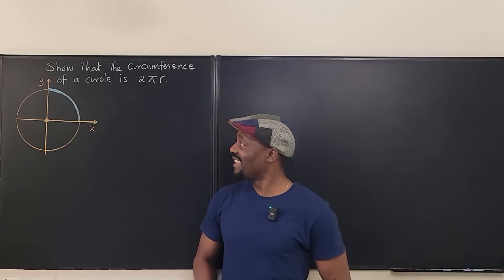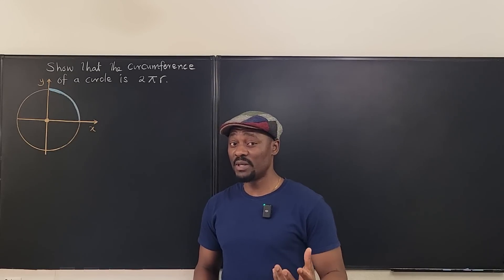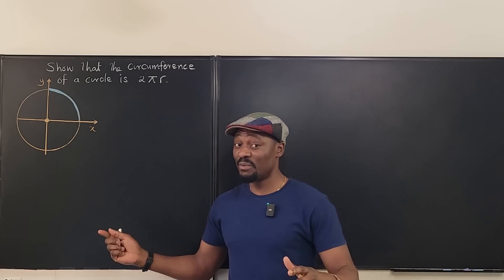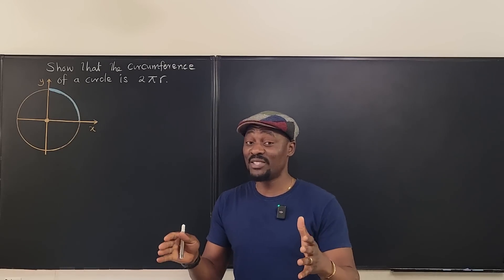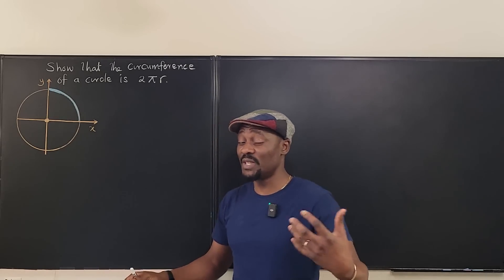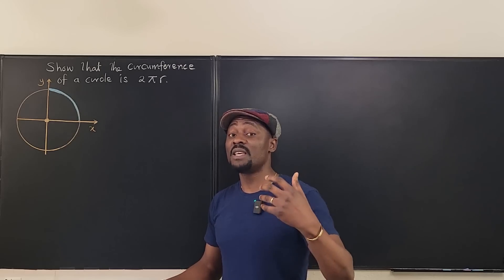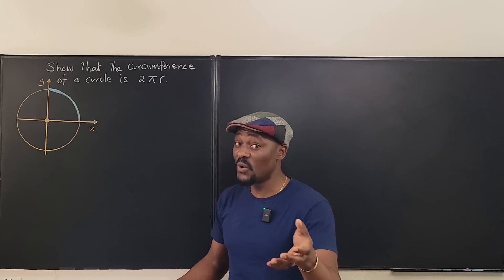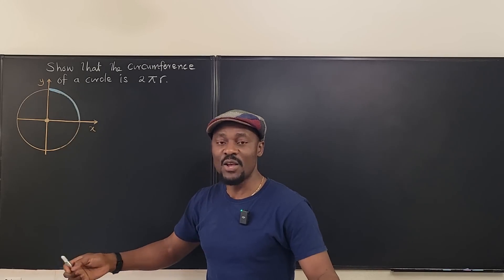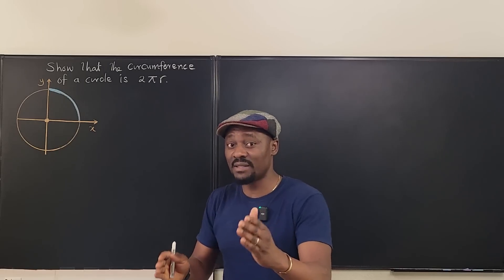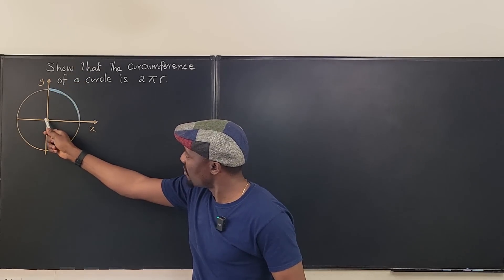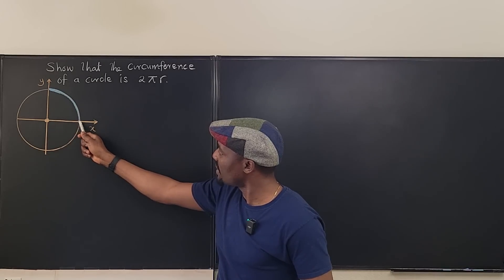Welcome to another video. Let's try to obtain the formula for the perimeter of a circle using calculus. I already drew the picture on the board. We know this is a circle, so you might think if we're using calculus there must be a function. We're going to use the equation of a circle, but a circle is not a function because it does not pass the vertical line test. So we're going to take a portion that passes the vertical line test.